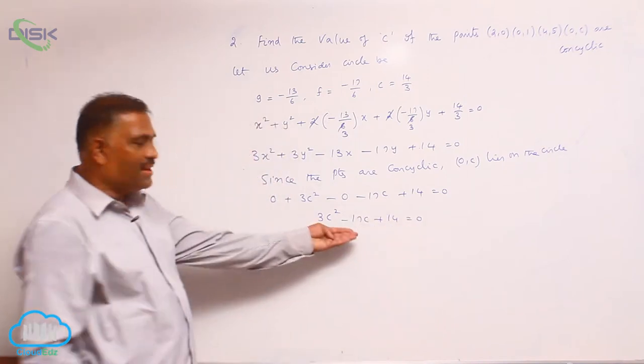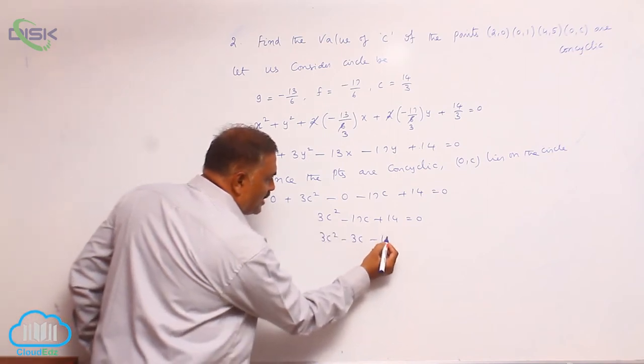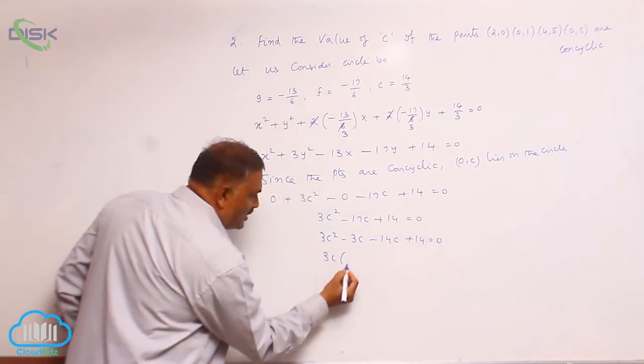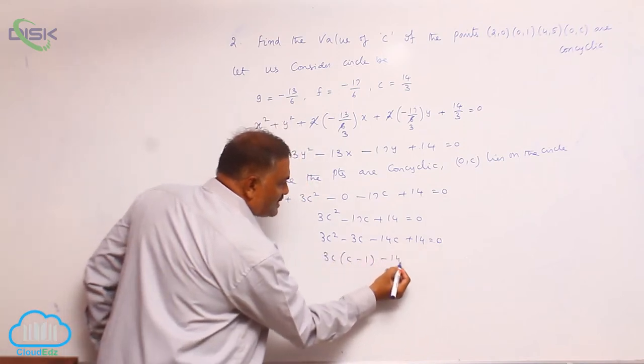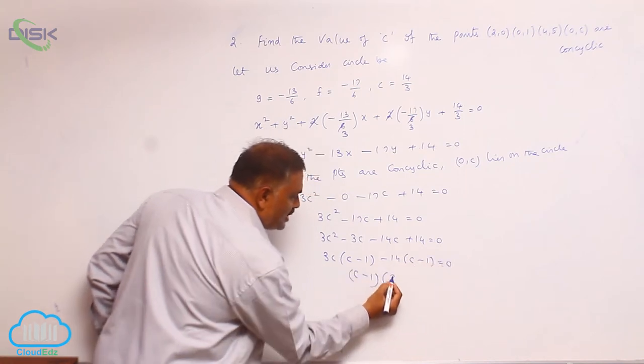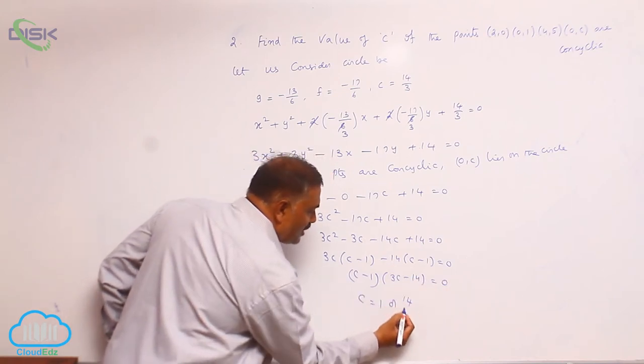The factors are very clear. 3c square minus 3c minus 14c plus 14 equal to 0. Let us take 3c common, c minus 1, minus 14 common, c minus 1. So c minus 1 into 3c minus 14 equal to 0, c is equal to 1 or 14 by 3.